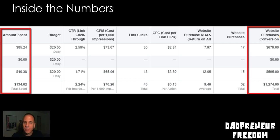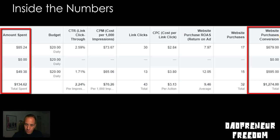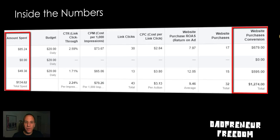The CPM is going to be astronomical with retargeting, so $70 is to be expected. As you can see: 43 link clicks, $3.13 a click. ROAS — return on ad spend — was 9.46. We had 32 website purchases and $1,274 in revenue.